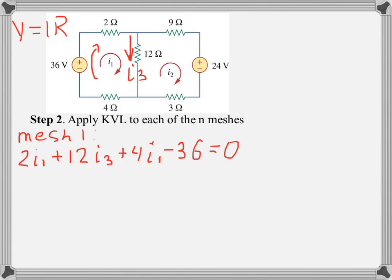Now let's repeat the procedure for mesh 2. So let's start with the 9 ohm resistor. The voltage across the 9 ohm resistor will be assigned as positive, and there is only I2 current flowing through that resistor. So we can write 9I2. Then going through 24 volts, we're going from plus to minus, so the voltage is assigned as positive. So we put plus 24.